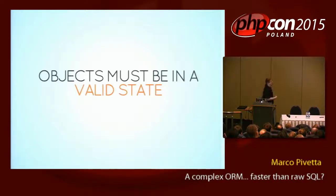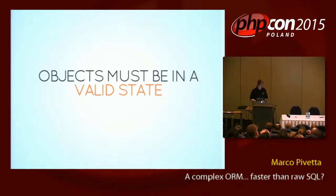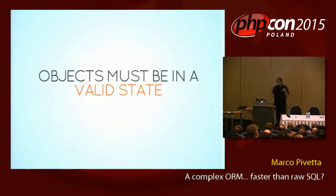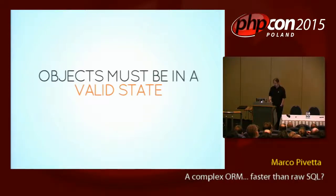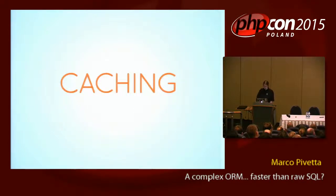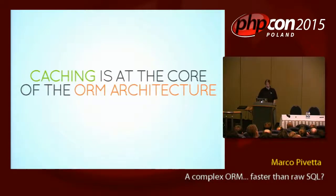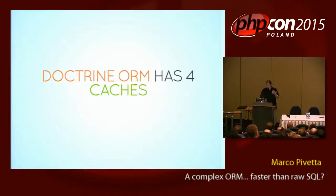Objects must stay in a valid state. The ORM doesn't deal with the state problems — it's just going to crash or cause big issues on the unit of work. I see a lot of people operating and changing data inside the ORM once it's inside — it shouldn't happen like this. Caching is at the core of the architecture of the ORM. It's pretty much built in — you can't work without it. It doesn't even make sense to run the ORM without it.